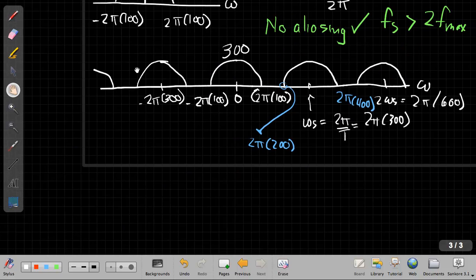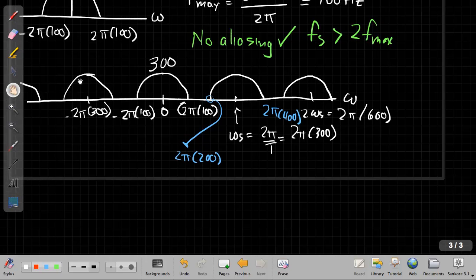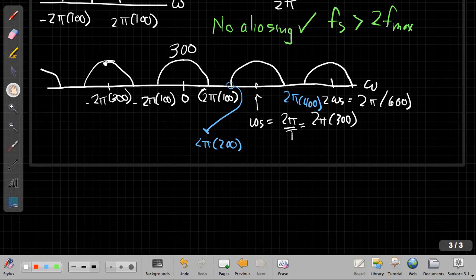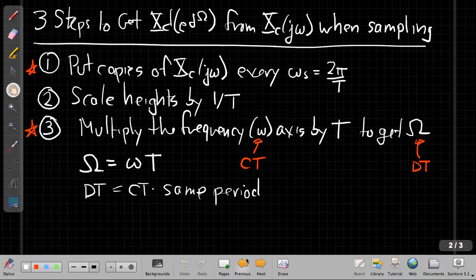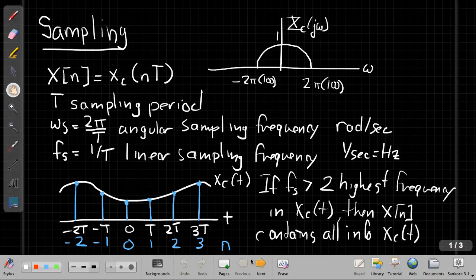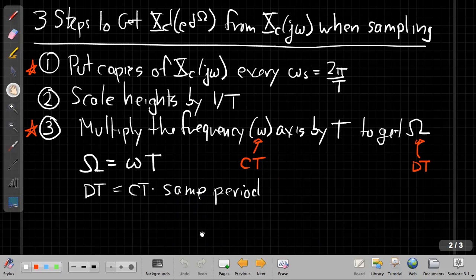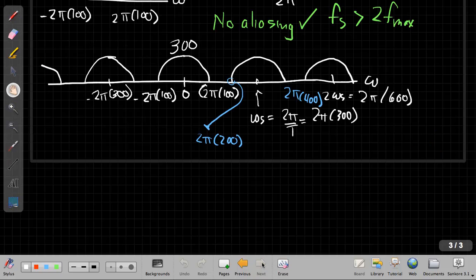Let's scoop this up some. Step 3 from the previous page is to multiply the frequency axis by T. And so when I do that, I'll get another copy of almost the same thing. So give me a second while I fill that in.